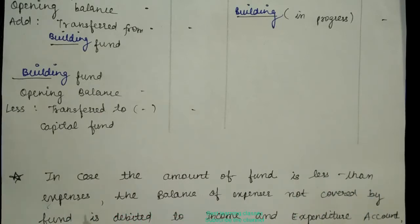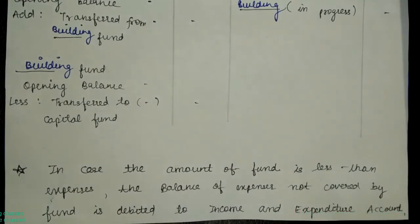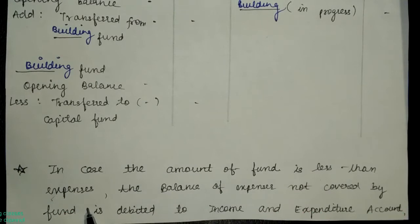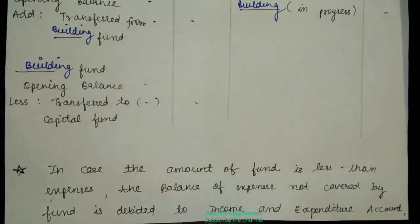Important point: in case the amount of the fund is less than the expenses, the balance of expenses not covered by the fund is debited to the income and expenditure account. For example, if you got a fund for 2 lakhs but expenses are 2 lakhs 20 thousand, the shortfall of 20 thousand cannot be covered from the fund and goes to the income and expenditure account on the debit side. The organization uses its general income to cover the remaining expenses — we can't just leave the building incomplete — so the uncovered amount goes to the expenditure side of income and expenditure account.